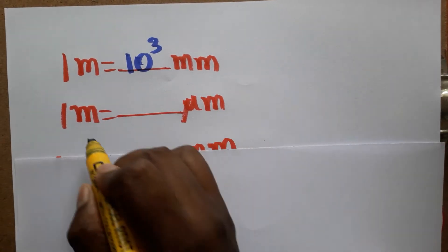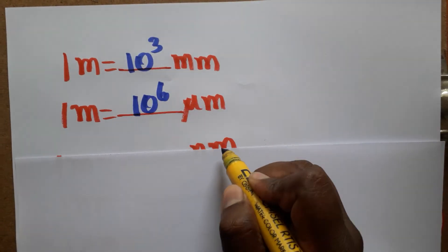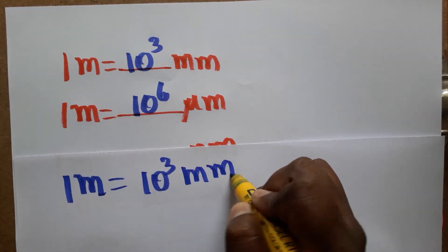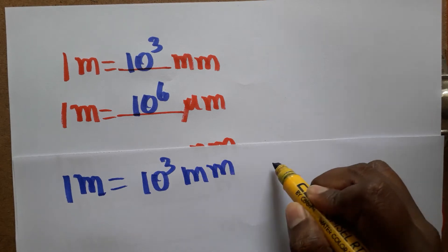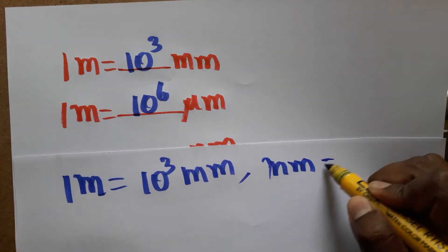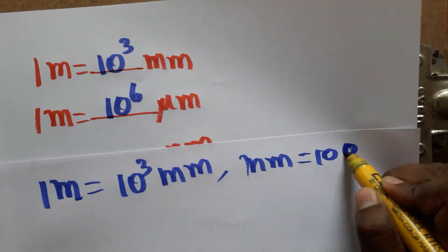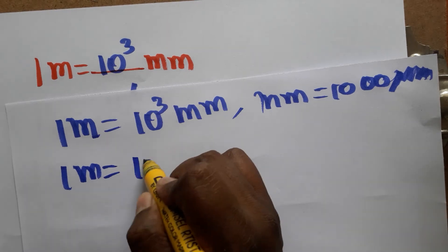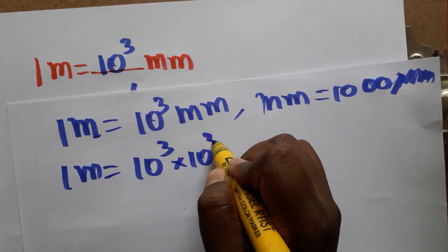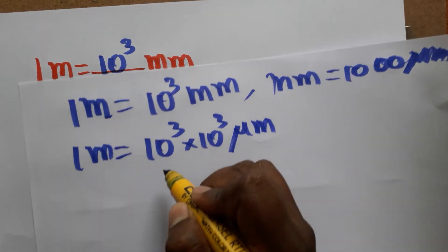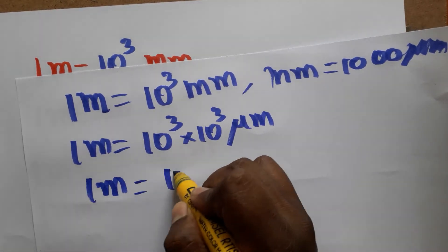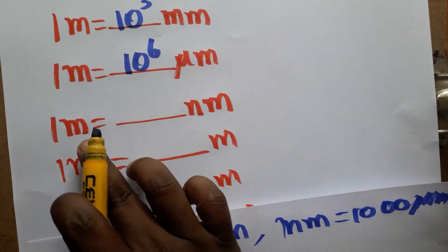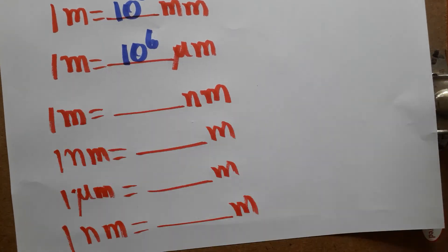Now, 1 meter is how many micrometers? It is 10 power 6 micrometers. How do we get 10 power 6? Because 1 meter is 10 power 3 millimeters, and 1 millimeter is 1000 micrometers. So 1 meter equals 10 power 3 into 10 power 3 micrometers, which gives us 10 power 6 micrometers.